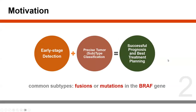The motivation for this research is that if we are able to detect PLGNTs at their early stages and, conditioned on achieving precise tumor subtype classification, then successful prognosis and treatment planning may be achieved. The most common types of PLGNTs are fusions and mutations in BRAF genes, which is what we will be focused on for this research.